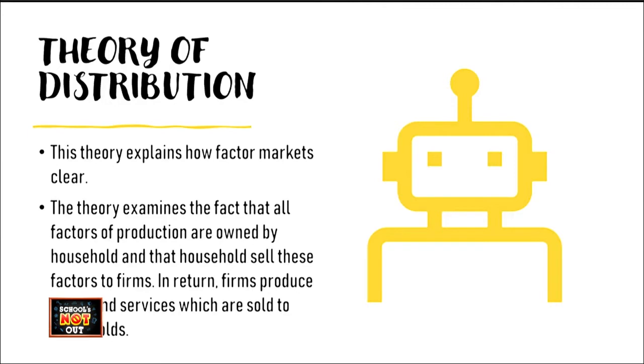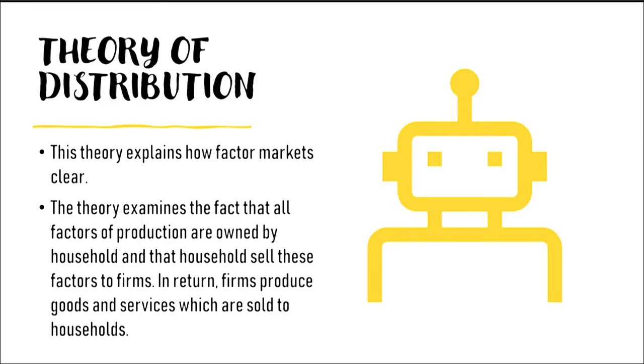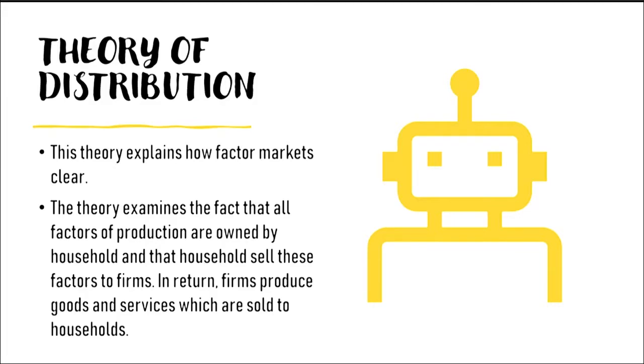This topic is from the third module, which is the theory of distribution in your syllabus — module three, topic one. The theory of distribution explains how factor markets clear. It looks at how firms use factors of production, which they demand from households. All factors of production are owned by households and sold to firms. In return, firms produce goods and services and sell those to households, paying households for the factors. There is a circular flow of income.